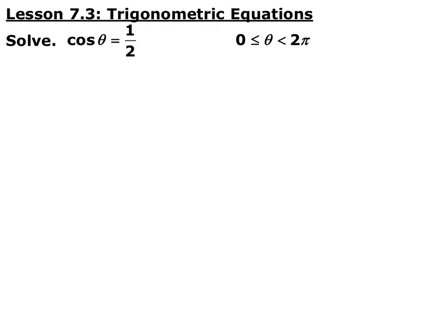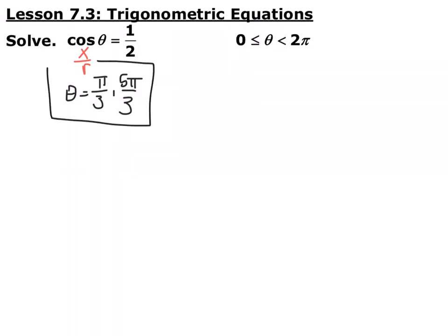So cosine equal to 1/2 — where between 0 and 2 pi does what angle give you a cosine ratio of 1/2? Remember cosine is x over r; we're on the unit circle, so r is just equal to 1. So where do we have an x-coordinate of 1/2? That means it's positive, so it's going to be in quadrants 1 or 4, and x = 1/2 is at the over-3's. So theta is either pi/3 or 5pi/3. These two angles give you cosine of theta equal to 1/2.